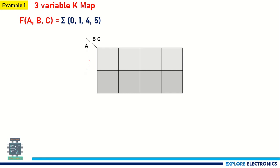For A, we have two different values: 0 and 1. For BC, we have four different values: 00, 01, 11, and 10. So the cells can be named as 0, 1, 3, 2, 4, 5, 7, 6.